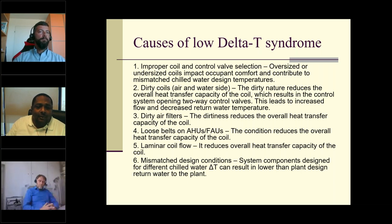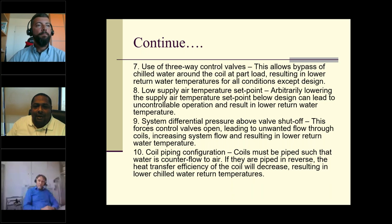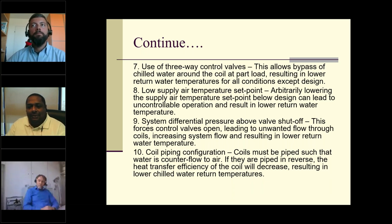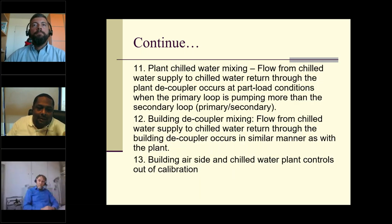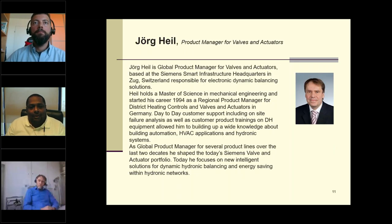Many consultants over-design buildings, creating the low delta T syndrome. Other causes include use of three-way valves for control, low supply air temperature, system differential pressure above valve shutoff, using on/off valves in FCU coils, piping configuration, chilled water mixing at the plant, secondary pumps not properly managed through delta P in the network, and decoupler flow from the chilled water supply.